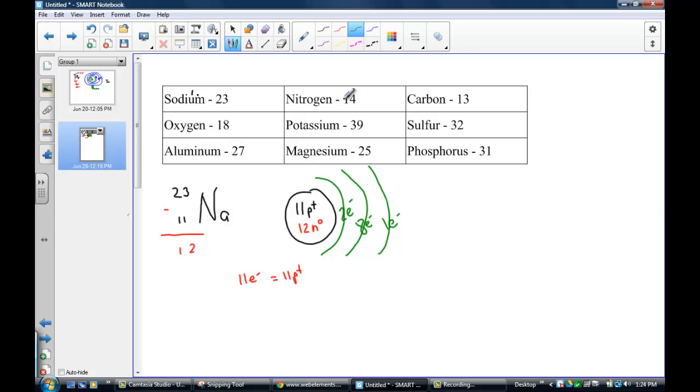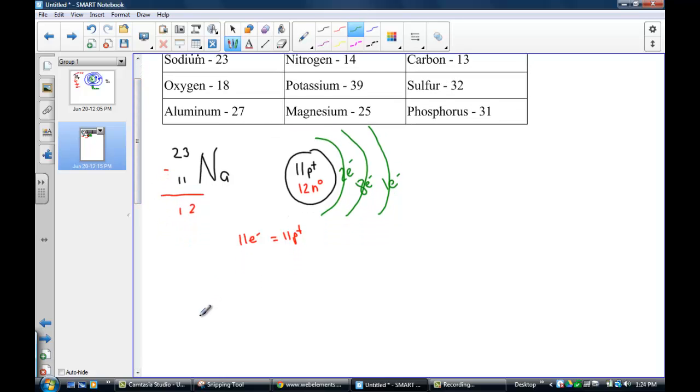I'll go across the row for nitrogen with 14 as its mass number. Nitrogen, 14. So here, I'll write the symbol, nitrogen, its mass number of 14.